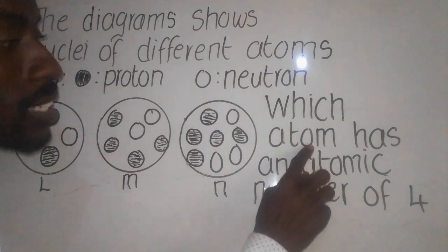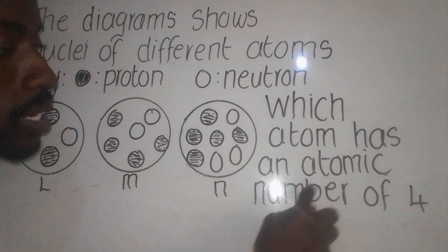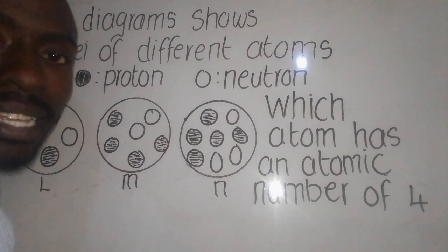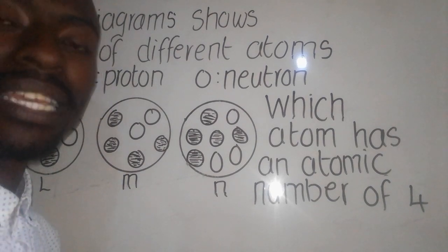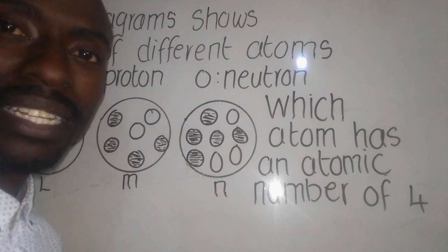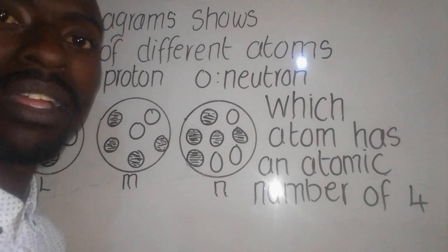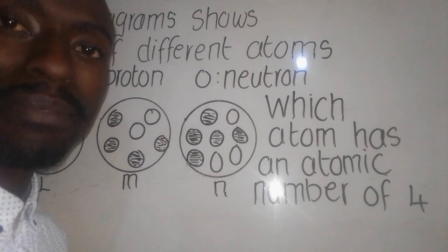The question is asking which atom has an atomic number of four. You need to understand that here we are talking about an atom. An atom is a small, electrically neutral, invisible particle that makes up matter.